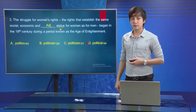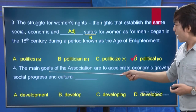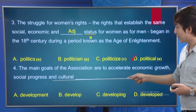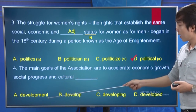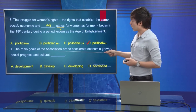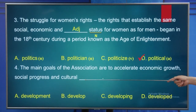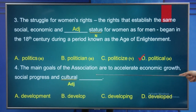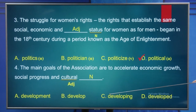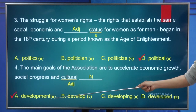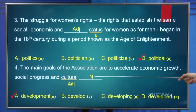Number 4: 'The main goals of the association are to accelerate economic growth, social progress and cultural ___.' Options: A. Development, B. Develop, C. Developing, D. Developed. Cultural is an adjective, so we need a noun after it. The answer is A - Development, as it is a noun: 'cultural development' meaning phát triển về văn hóa.